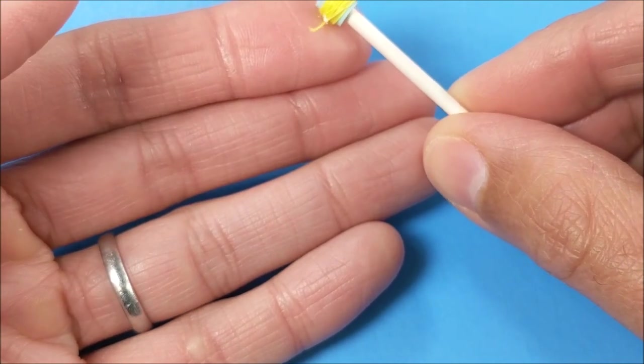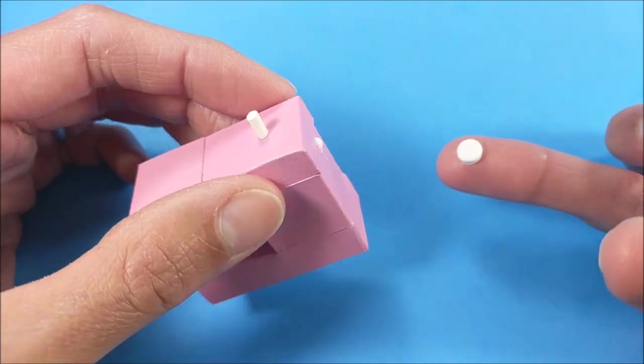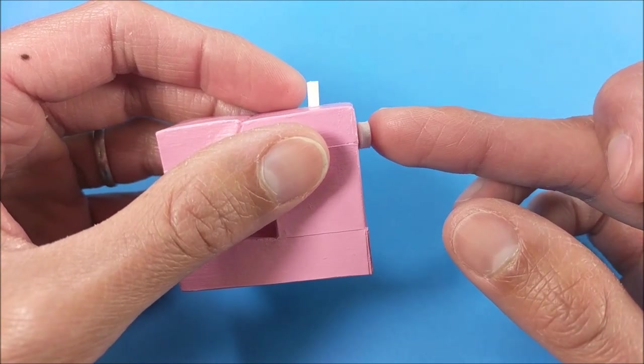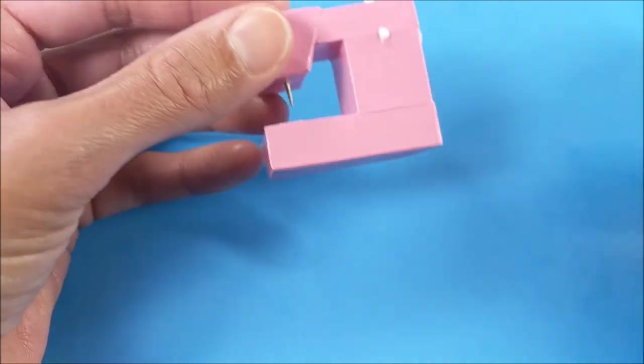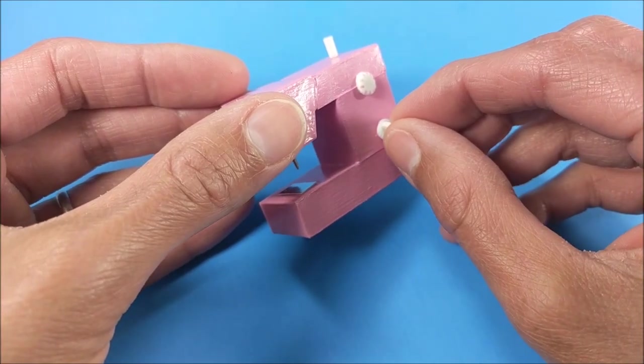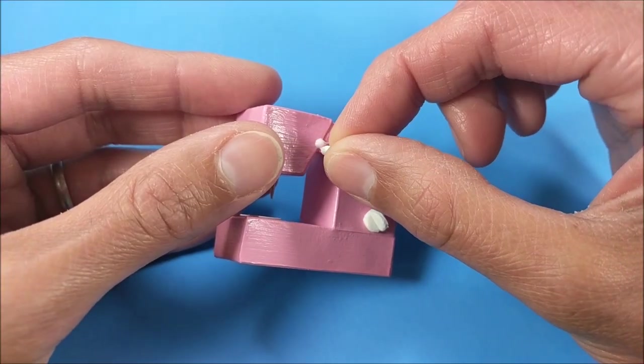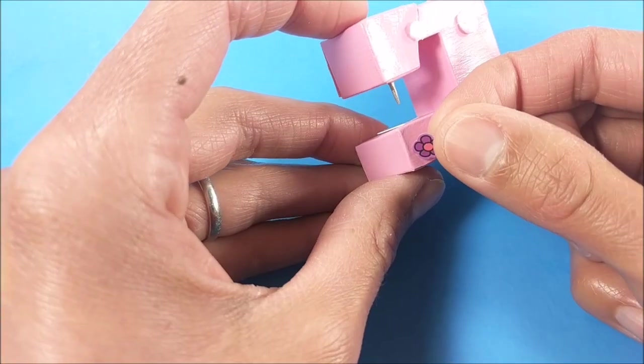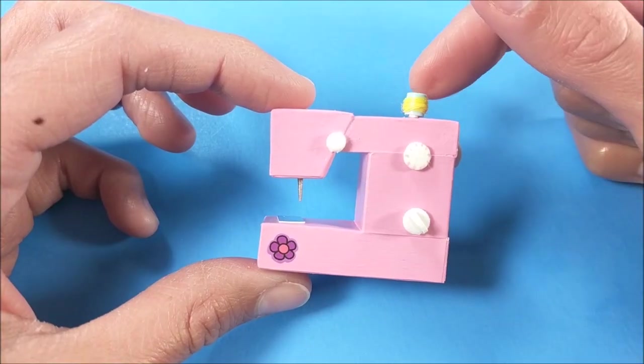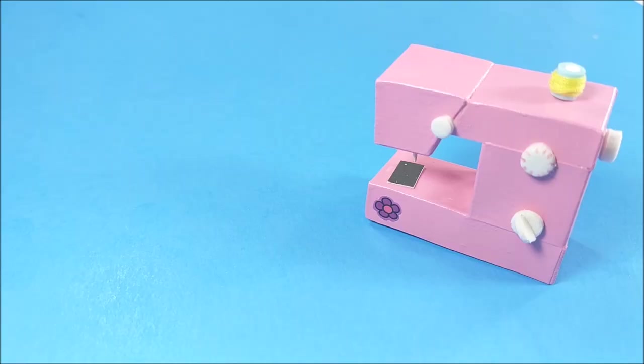I pop on my thicker piece of craft foam along the back, then add my other details. And for a little bit more detail, I'm just adding a sticker. Pop on my thread, and you are so totally good to go.